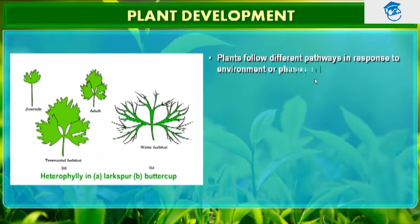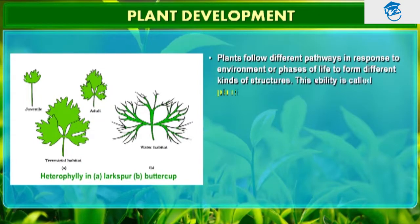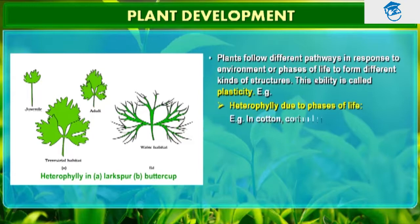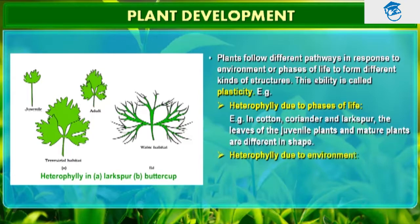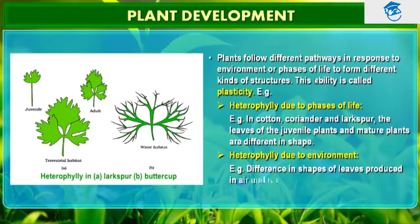Plants follow different pathways in response to environment or phases of life to form different kinds of structures. This ability is called plasticity. For example, heterophylly in cotton, coriander, and larkspore. Hetero means different.